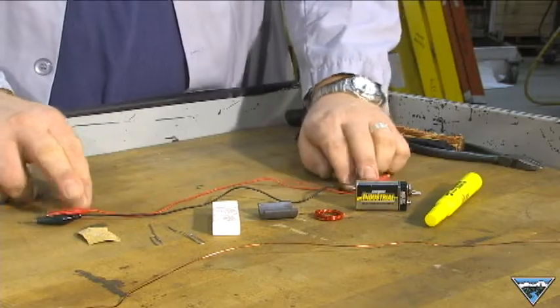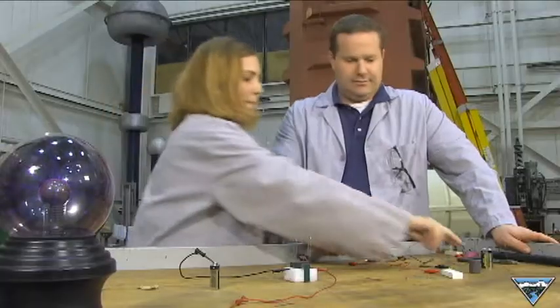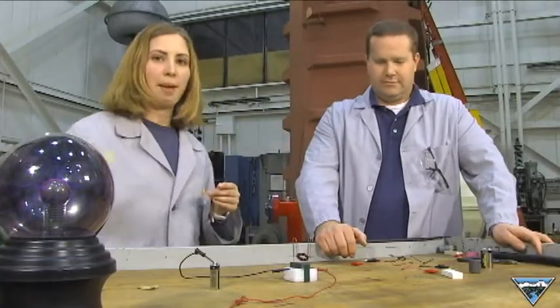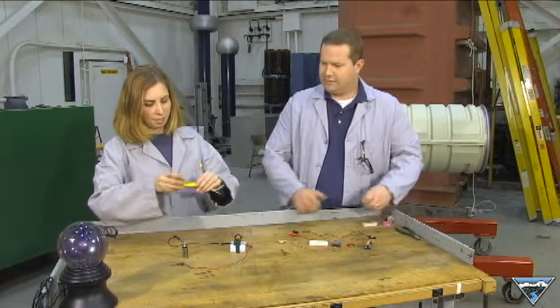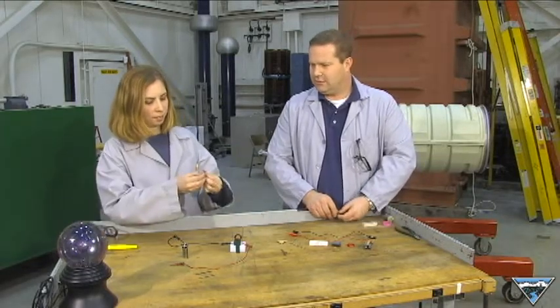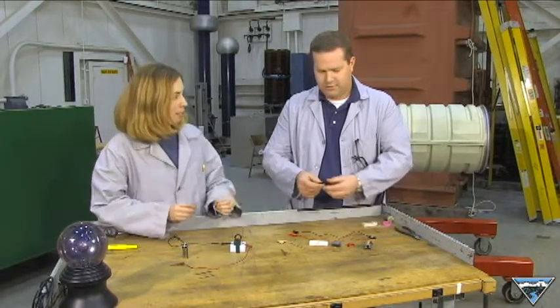You'll also need two pieces of wire to complete the circuit. Take your enameled wire and wrap it around a highlighter or a marker. How many times? I'd say 10 to 15. Then once you have your coil, you want to wrap your lead. Why don't you show us how to do that?